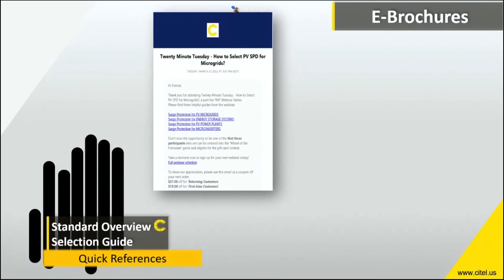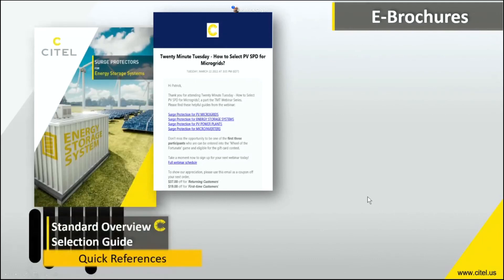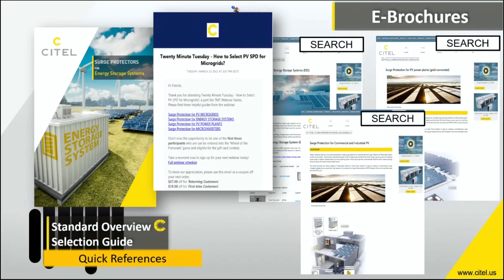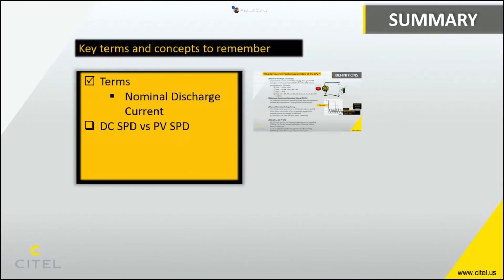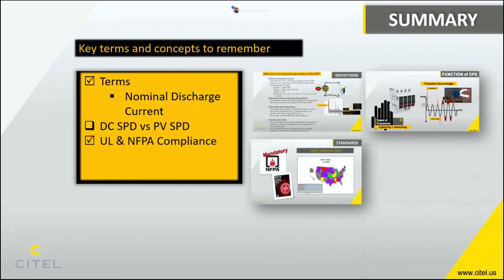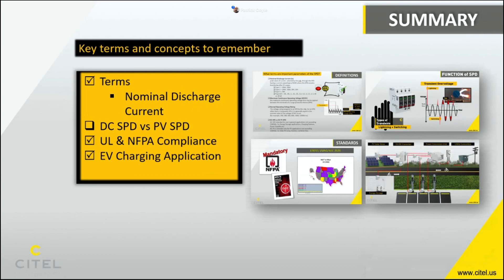In your follow-up thank you email you'll find selection guides, more details on the standards, and helpful EV charging documents for Level 1 and Level 2 residential as well as DC fast charging, plus energy storage and PV flyers. To summarize: we learned important terms like the unintended SPC and nominal discharge current, the function of the SPD against transient surges from lightning, switching, and TOV, and how to select the DC SPD based on UL standards and NFPA guides.